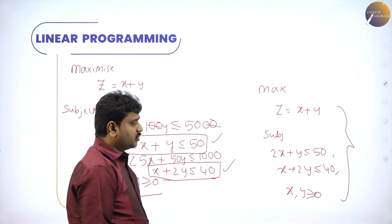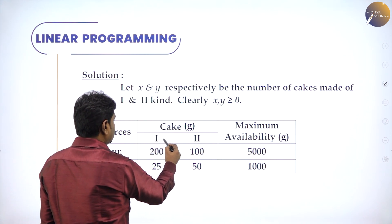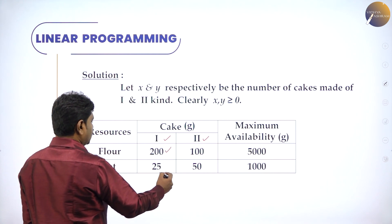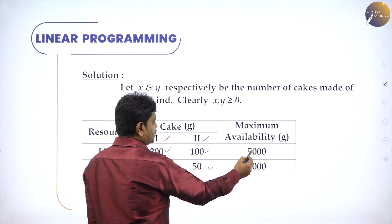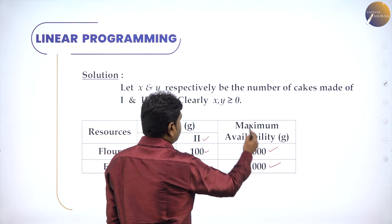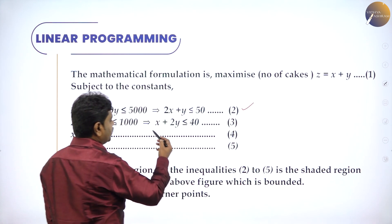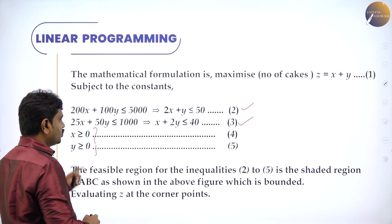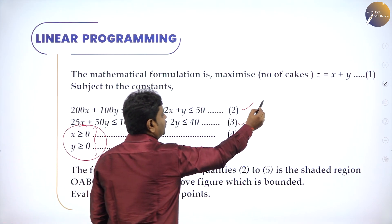So the LPP is: maximize z = x + y, subject to 2x + y ≤ 50, x + 2y ≤ 40, and x, y ≥ 0. From the table with two types of cakes, type 1 requires 200g flour and 25g fat, type 2 requires 100g flour and 50g fat, with maximum availability of 5000g flour and 1000g fat. The non-negativity constraints represent the first quadrant, so no need to graph those separately. Your task is to graph these two inequalities and find the common region.